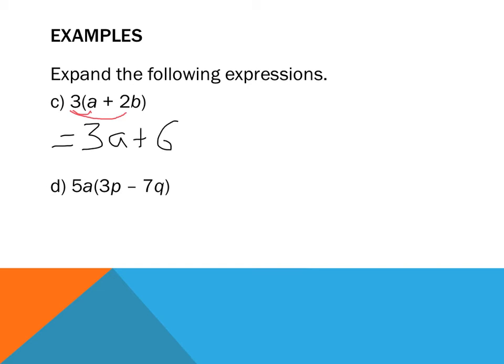3 multiplied by 2 becomes 6, and then I have the b left over, so 2b multiplied by 3 becomes 6b. It's a positive, so I put a plus because there's a plus in there and the 3 at the front is positive. So the answer is 3a plus 6b. If you feel confident, pause the video and try the next one yourself.